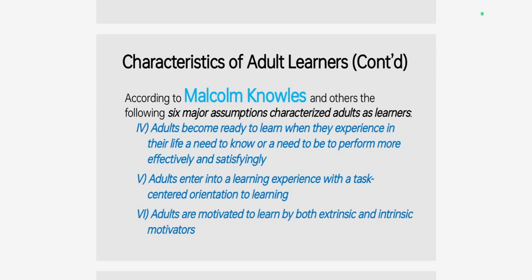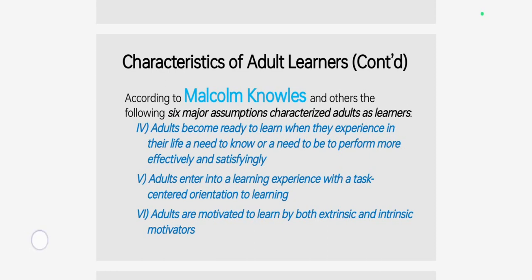The fifth one is adults enter into a learning experience with a task-centered orientation to learning. And the sixth one is adults are motivated to learn by both extrinsic and intrinsic motivators. Now we are going to see the details of all these six characteristics of adult learning.